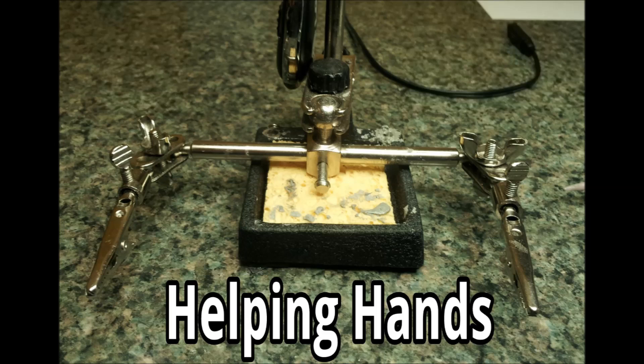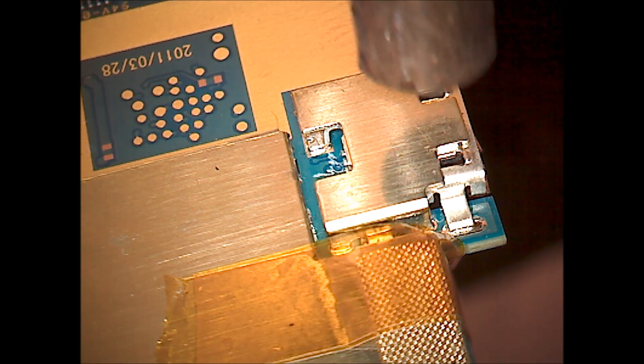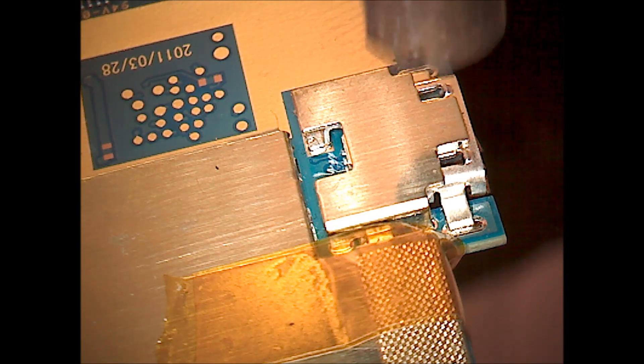You're going to need your helping hands or something similar to hold the board of the phone with. You're also going to need your solder paste and some solder wick or copper braid that you're going to use to remove some of the excess solder off of the board. What we're using there is 0.25 inches wide.